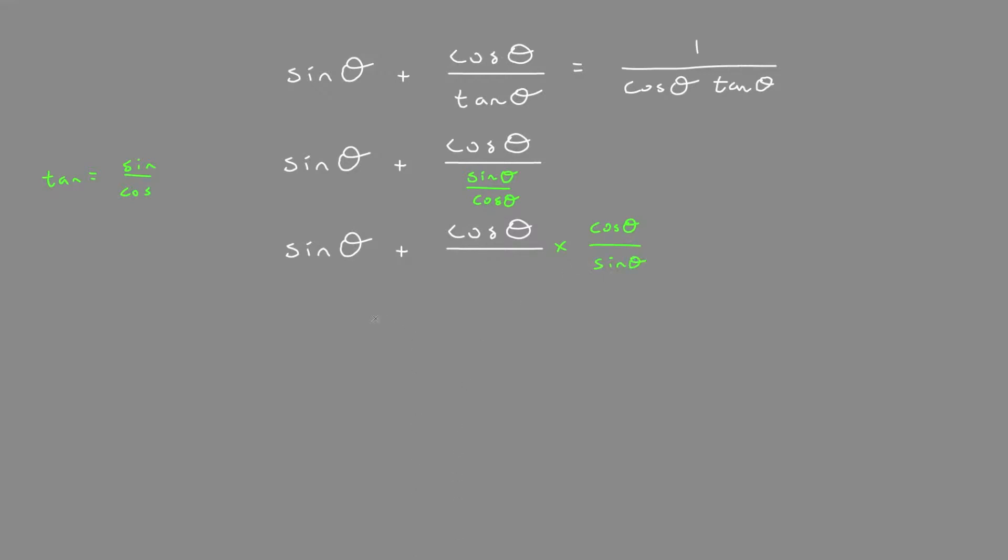Simplifying this, we have sine theta plus cos squared theta over sine theta. So we have two terms. Let's try to make one term. We'll make a common denominator.